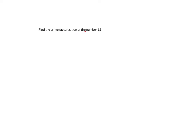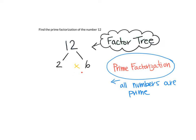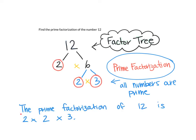Let's find the prime factorization of the number 12 together using a factor tree. 12 can be factored into 2 times 6, but we're not done because we need to factor all numbers until they're all prime. 6 is not a prime number, but 2 times 3 are prime numbers. So the prime factorization of 12 is 2 times 2 times 3.